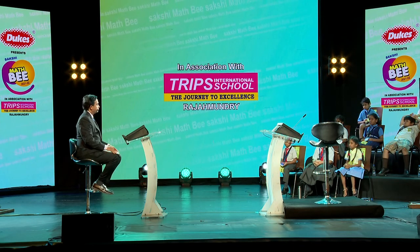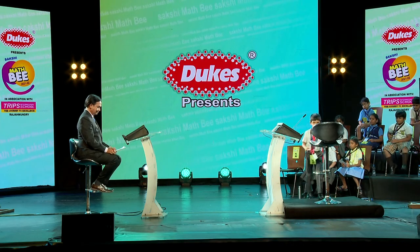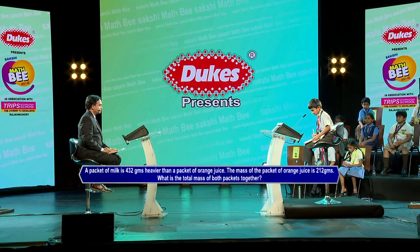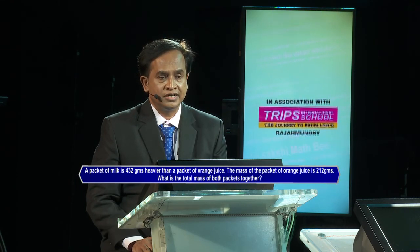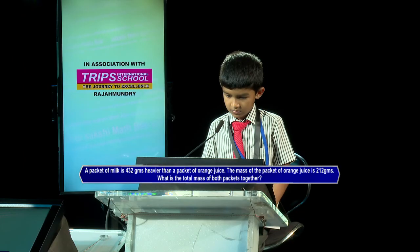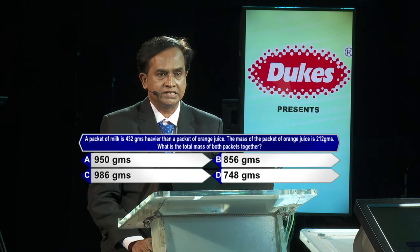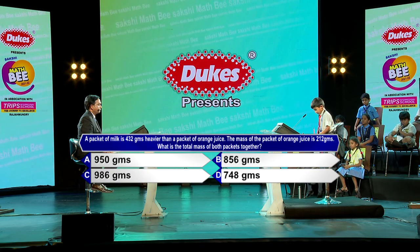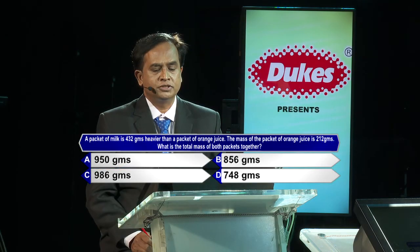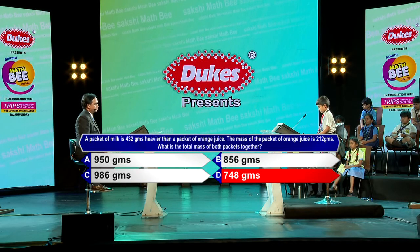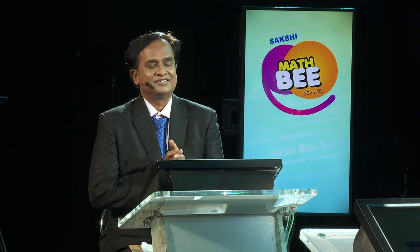So we completed the tiebreaker round. Many congratulations to the students. I invite Vihas Naidu from Trips International School Rajmandri, please come up. Question please: A packet of milk is 432 grams heavier than a packet of orange juice; the mass of the orange juice is 212 grams. What is the total mass of both packets together? Options: A) 950 g, B) 856 g, C) 986 g, D) 748 g. Option D — kindly lock option D 748 grams. I'm so sorry, option D 748 grams is wrong; option B 856 grams is correct. Don't worry, congratulations for coming this far.